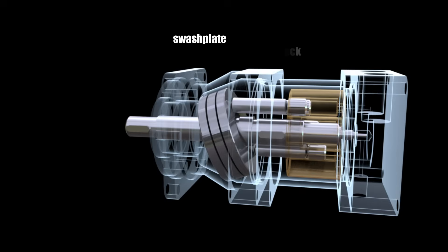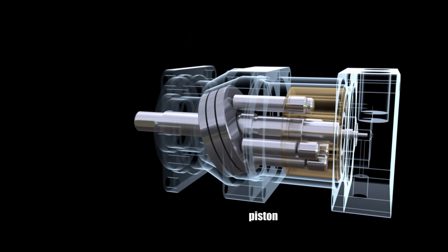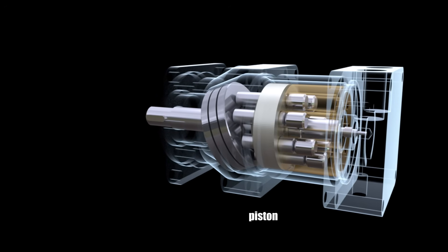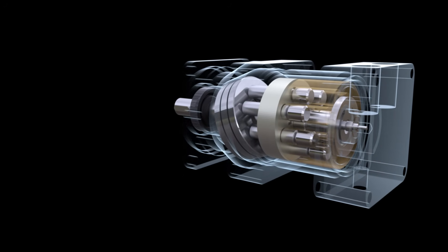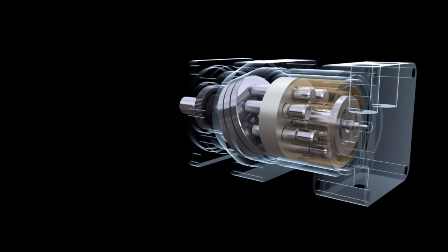The pistons rest on a swashplate, supported by special pushers that have a spherical surface. The cylinder block is installed on a valve plate connected to a rear cover, in which there are channels for connection with pressure and suction pipelines.